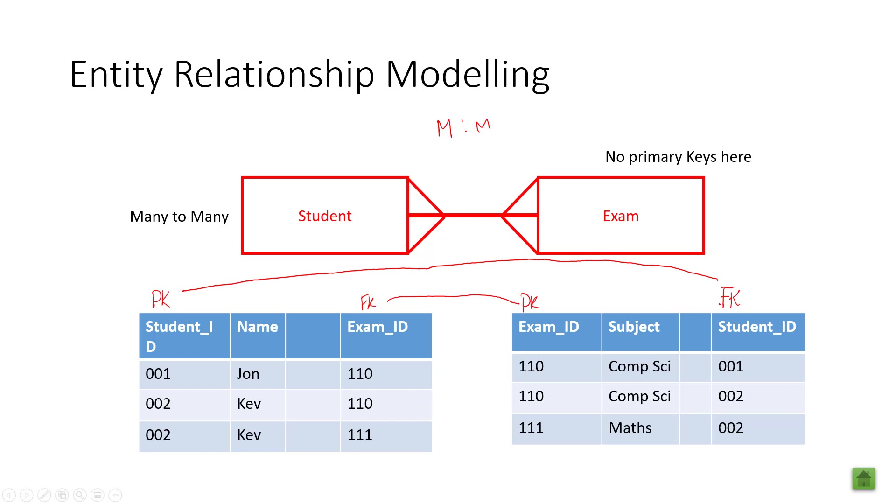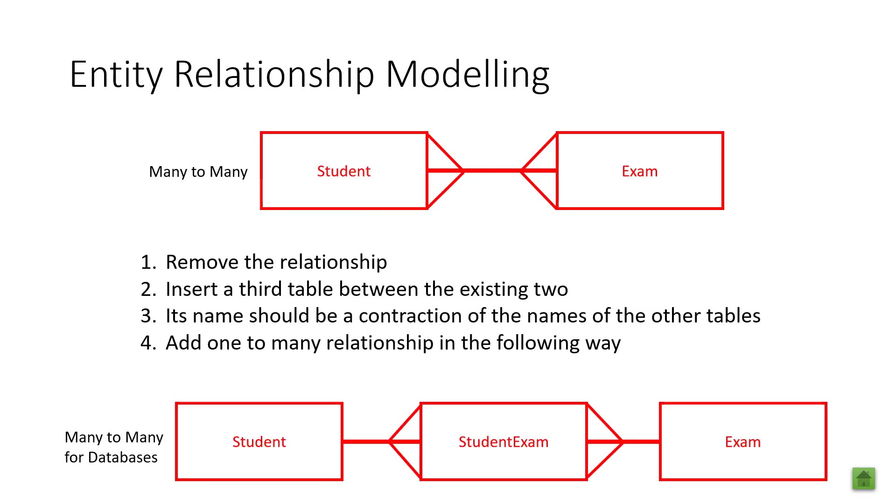So, in order to fix this situation, we need to break this down. And the way to do it is if you ever have this relationship going on, you need to create a linking table in between here. The first step of breaking down a many to many relationship is to remove the relationship altogether. The second step is to insert a third table, often called the linking table, between the existing two tables. In this example, we're going to break the relationship between student and exam.